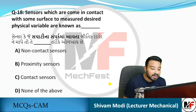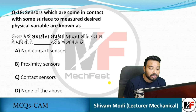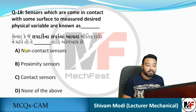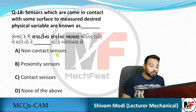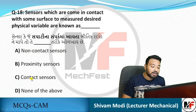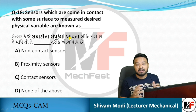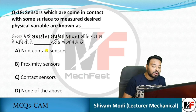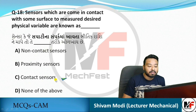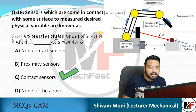Next question: sensors that come in contact with a surface to measure a desired physical variable are known as — options include non-contact, proximity, and contact sensors. Since the question specifies sensors that come in contact with a surface, the answer is obviously contact sensors. Some examples of contact sensors are also shown.